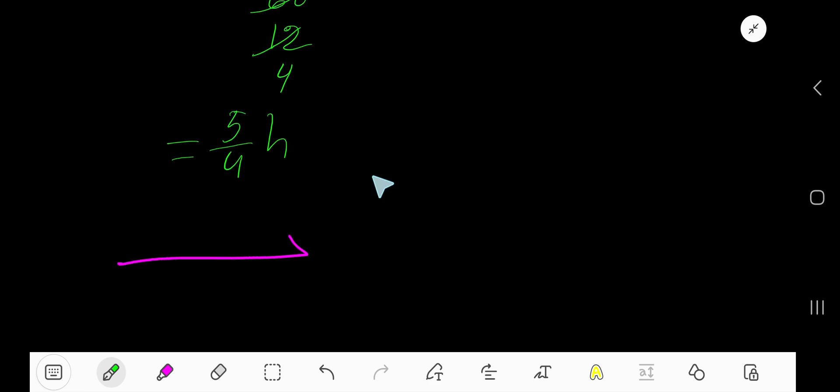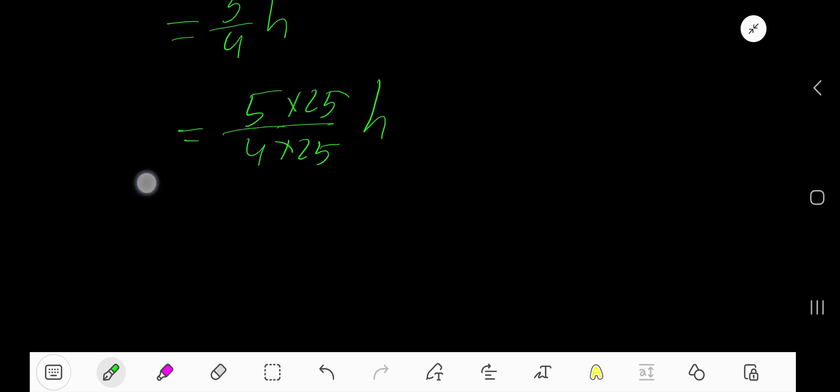Now multiply both numerator and denominator by 25. We would like to convert this denominator to 100. 5 times 25 is 125, carry 2 to the next column.